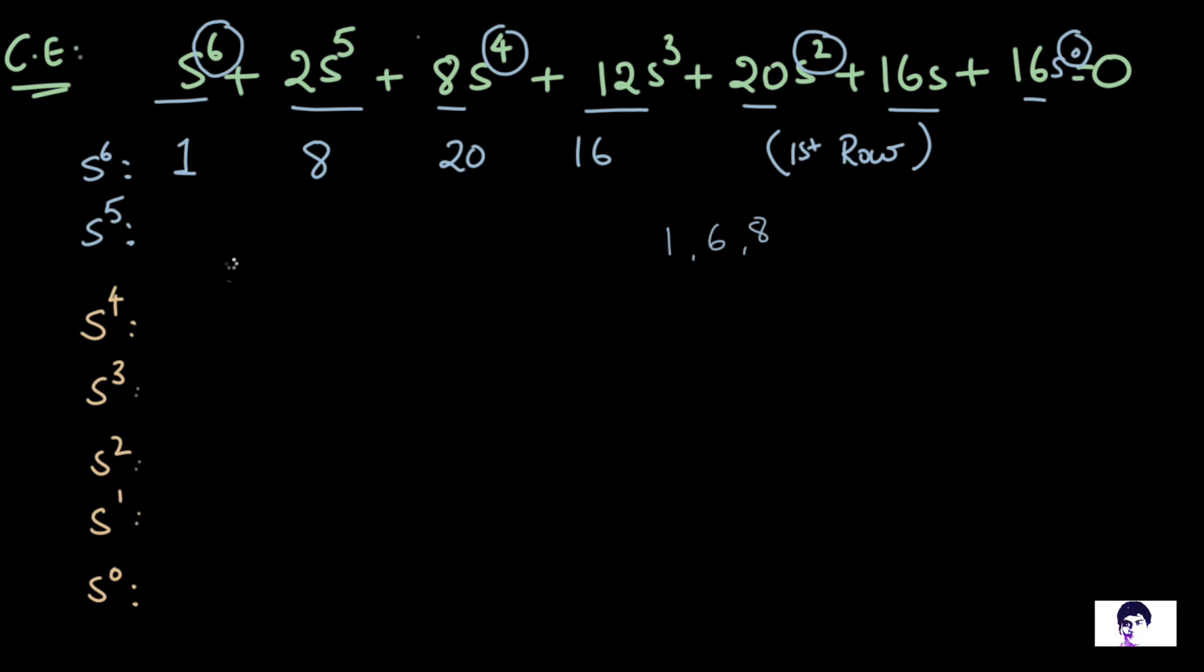So on simplifying, the elements of the row S^5 are 1, 6, and 8. So now the first element of the S^4 row would be 1 into 8 minus 1 into 6 by 1. Actually, I am going to use the space on the right so that it is not too cramped. So where were we? 1 into 8 minus 1 into 6 by 1. This is our first element. Remember that in the denominator you always have the first element of the preceding row. Let's quickly get rid of this here. So the first element of S^4 is 8 minus 6 by 1, which is 2.